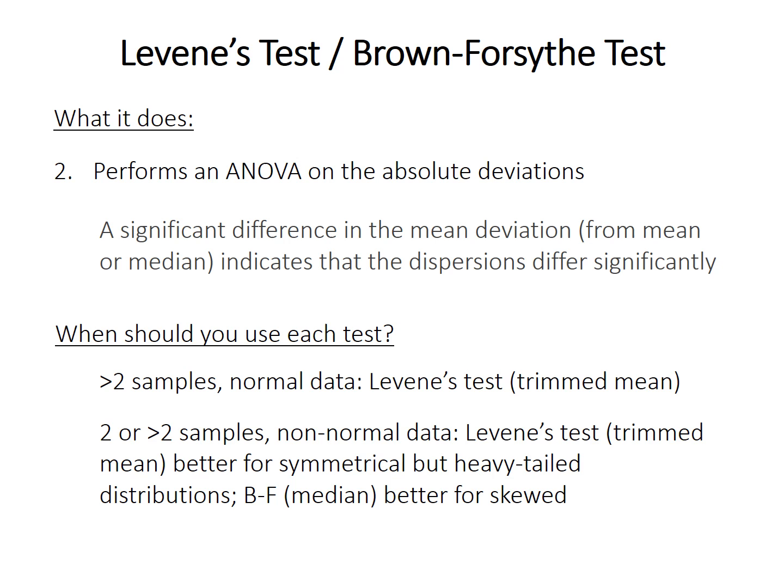So when should you use each test? For more than two samples that are close to being normally distributed, you should still use Levene's test. But if you have two samples or more than two samples with non-normal data, the rule of thumb is that Levene's test — using deviations from the mean — is best if the distribution is symmetrical but heavy-tailed, meaning flatter with larger tails than a typical bell curve. But if the samples are non-normal and skewed, it's best to use the Brown-Forsythe test for deviations from the median.